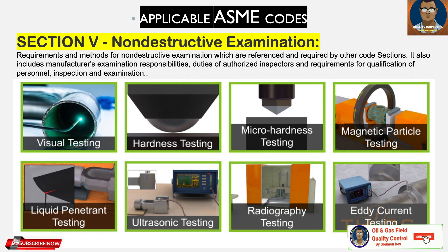ASME Section 5 is also very popular because all non-destructive testing requirements have to be followed from here. It covers requirements and methods of non-destructive testing which are referenced and required by other code sections. It also includes manufacturer examination responsibilities, duties of authorized inspection, and requirements for qualification of personnel. ASME Section 5 is used for visual testing, hardness testing, micro hardness testing, magnetic particle, liquid penetrant, ultrasonic, radiography testing, eddy current testing, and more.